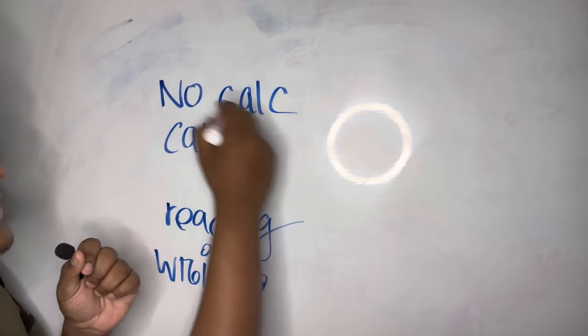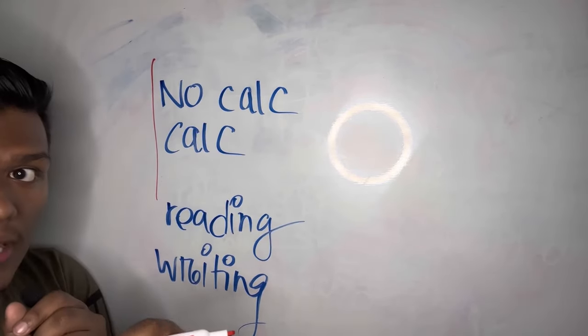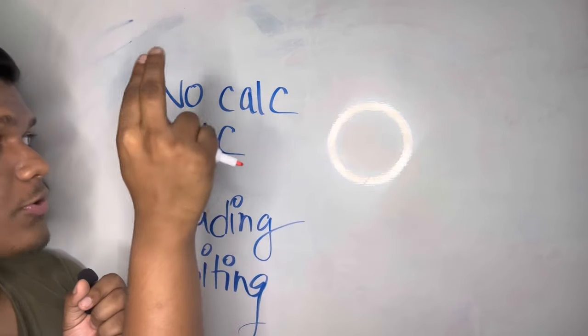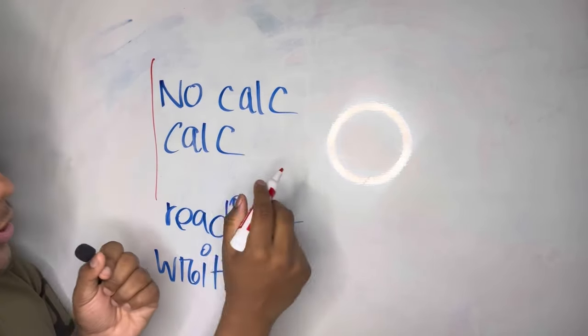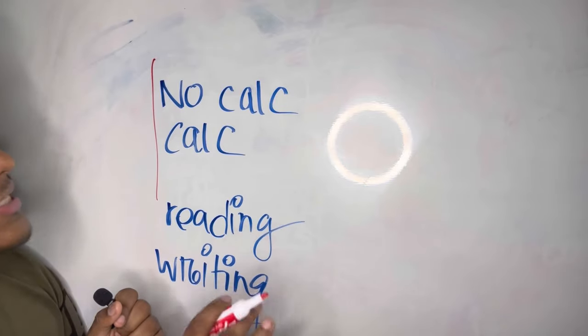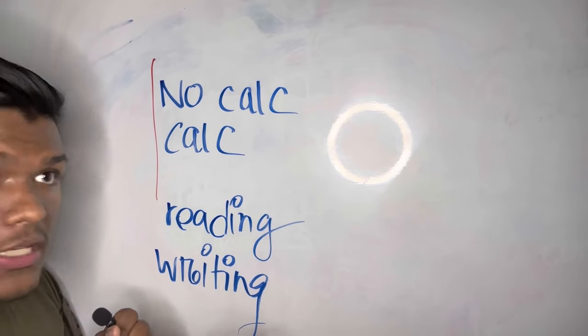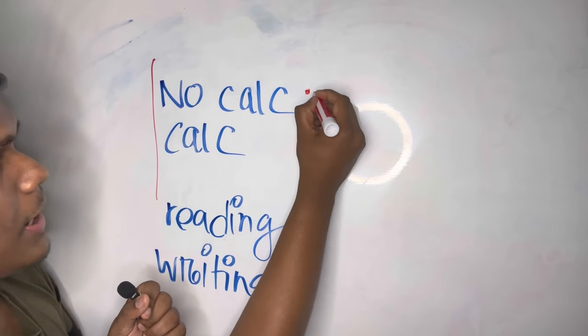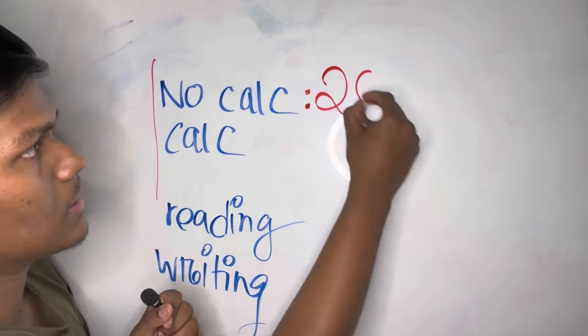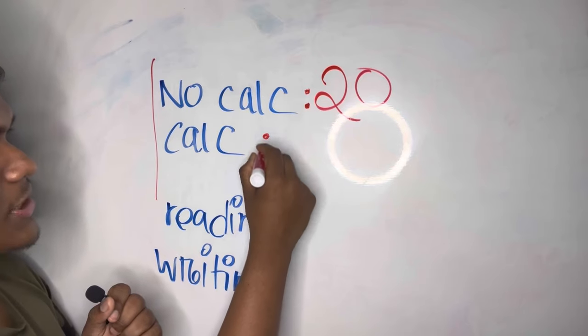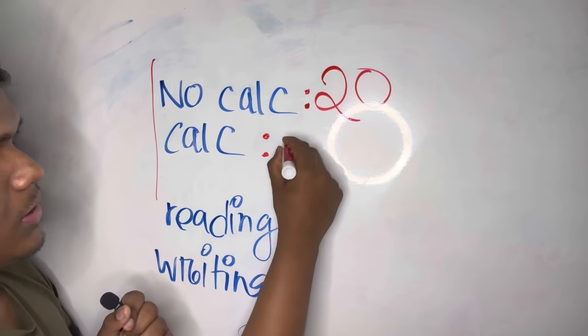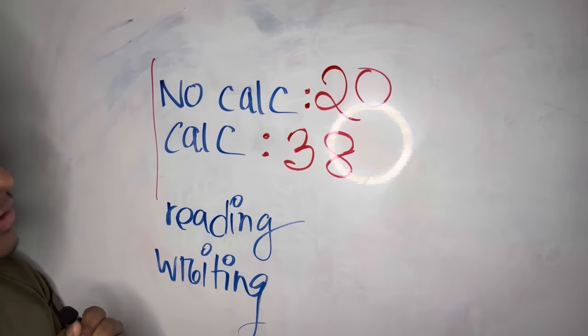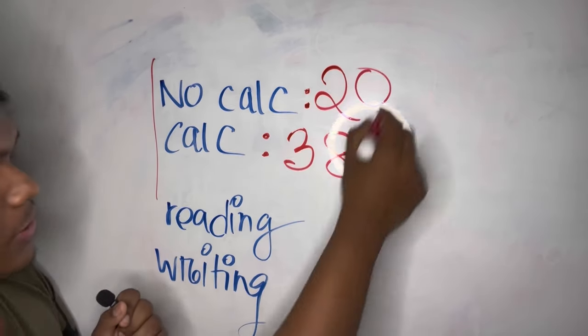The math section is divided into two parts. In one part you cannot use a calculator, and in the other part you can use a calculator. The distribution is pretty much similar, but for the sake of this, I'll just say the no-calculator section has around 20 questions, and the calculator section has around 38 questions, if I'm not wrong. Total math section has 58 questions.